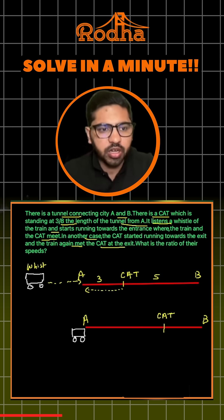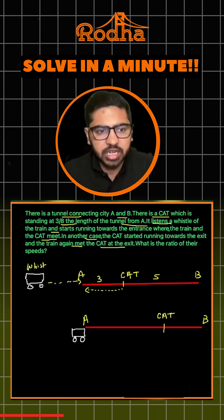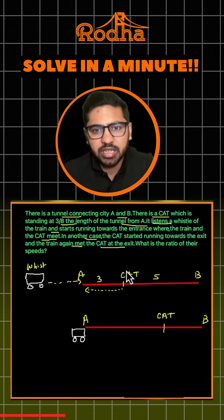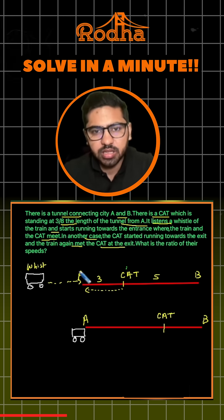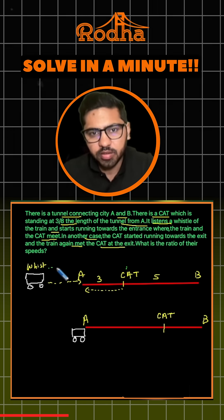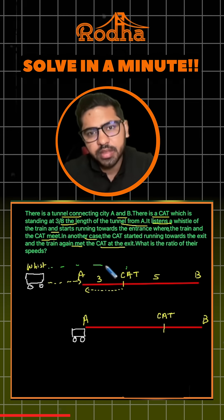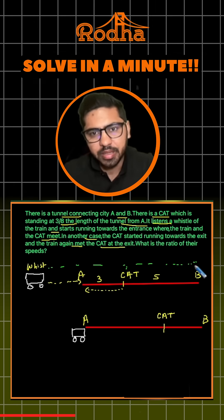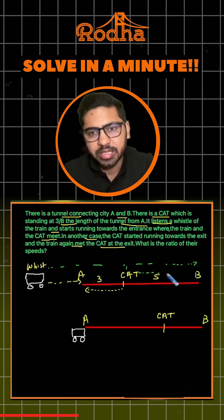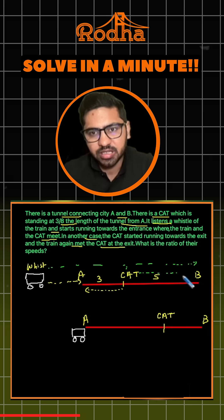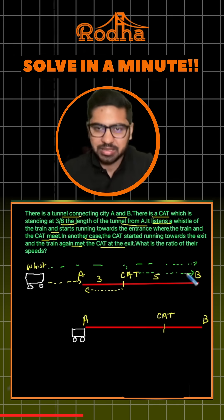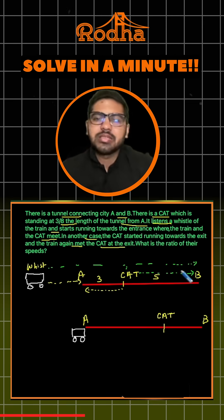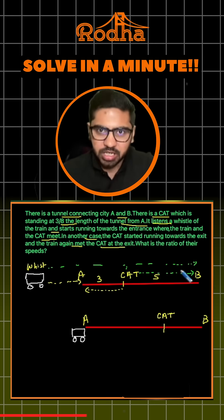So what happens in the other scenario? The train travels from its starting point to the exit of the tunnel at city B, and the cat also goes to B. Both of them meet at the exit, so the time is constant in both scenarios.